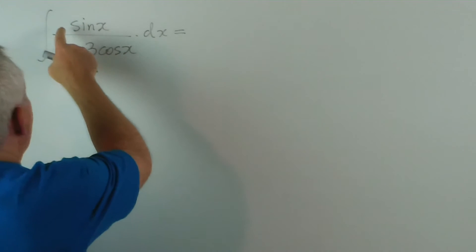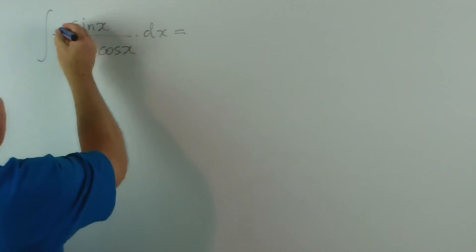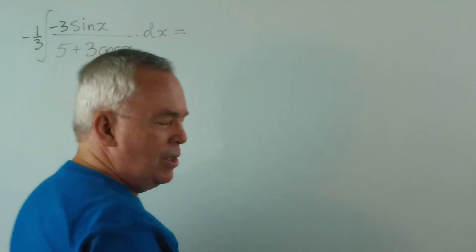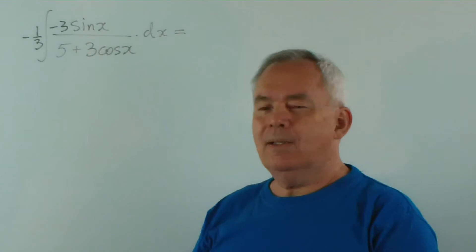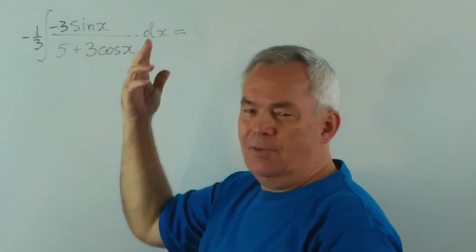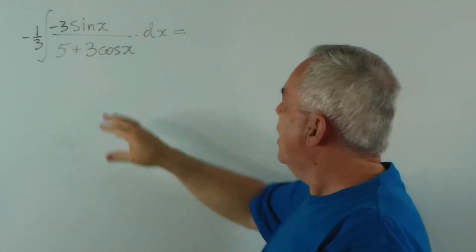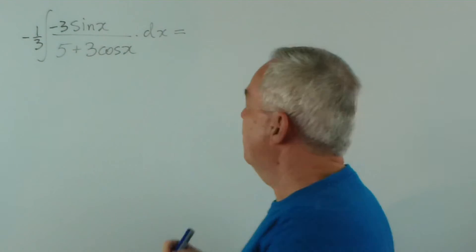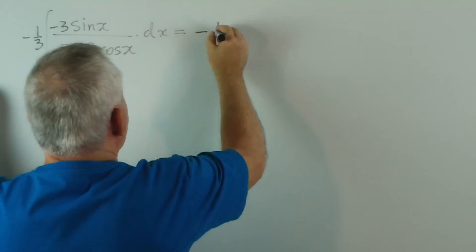So all I would need, if I had a negative 3 here, we'd be in business. So look at this. I put a negative 3 there. I put a negative 1 third out the front to compensate. Because negative 1 third times negative 3 is 1. And now the numerator is the exact derivative of the denominator. And here's the solution in one step.